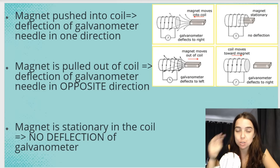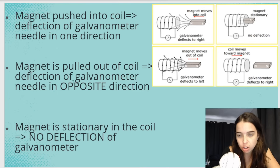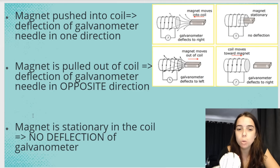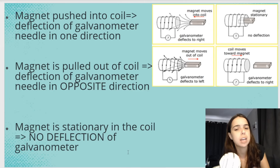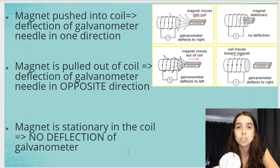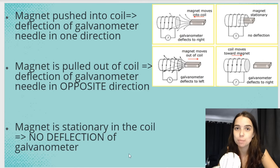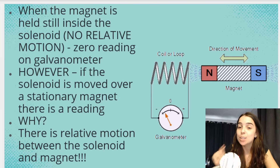Here is a summary of what happens in different circumstances. When the north end of the magnet is pushed into the coil, the galvanometer needle deflects in one direction. When I pull the north end out, the galvanometer needle deflects in the opposite direction. If the magnet and coil are both stationary, there is no deflection. In your exam, they could ask why — you need to say there will only be a deflection if there's an induced EMF or induced current, and there will only be an induced EMF and current if there's relative motion between the magnetic field and your conductor, because there must be a change in magnetic flux. It's all about relative motion.